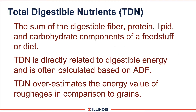TDN stands for total digestible nutrients. This is the sum of digestible fiber, protein, lignin, and carbohydrates. It's an old term — many of us grew up looking at balancing rations energetically based on TDN. It's directly related to digestible energy in the other system. Generally, TDN overestimates the energy value of forages or roughages.